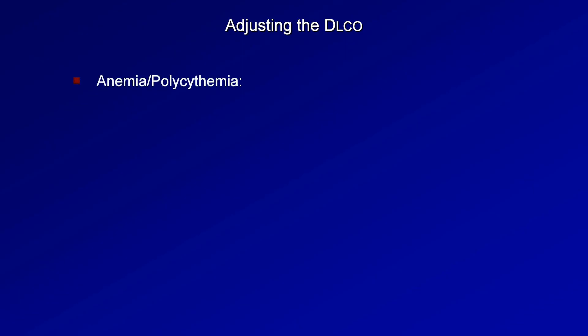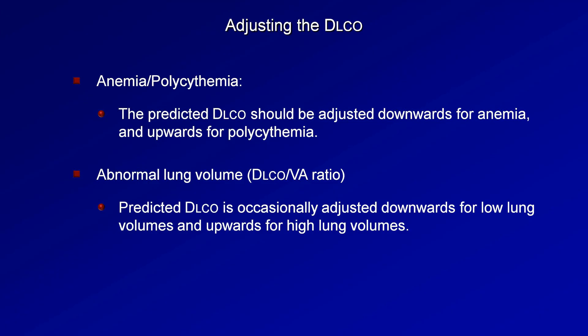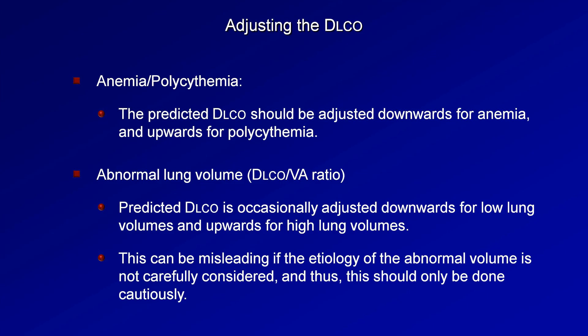The predicted DLCO is often adjusted based on one or two issues. First, anemia and polycythemia can influence the DLCO, so the predicted DLCO should be adjusted downward for anemia and upward for polycythemia. To make this adjustment, the PFT technicians use standardized equations, the details of which most providers will never need to know. The predicted DLCO is also occasionally adjusted to abnormal lung volumes, creating something called the DLCO to ventilation ratio. This adjusts the DLCO downward for low lung volumes and upward for high lung volumes. Unfortunately, this adjustment can be misleading if the etiology of the abnormal volume is not carefully considered, and thus should only be done cautiously and is usually not necessary.